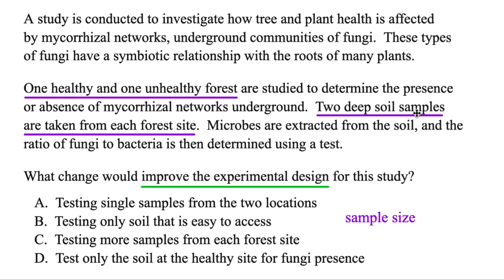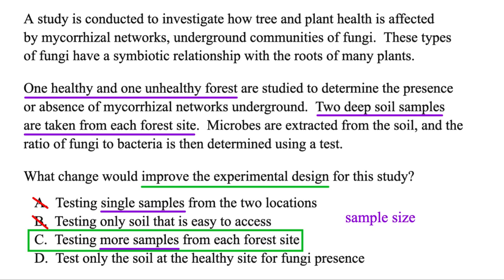You actually want to get quite a few samples because you want those to represent the whole forest. The first option says testing single samples — well, that's definitely no good because that's not going to be representative, so that's out. The next one, testing only soil that's easy to access — that's called convenience sampling, and that's not good either. You want a wide variety. The third one, testing more samples from each forest site — bingo, that's exactly it. So the more samples, the better the design.